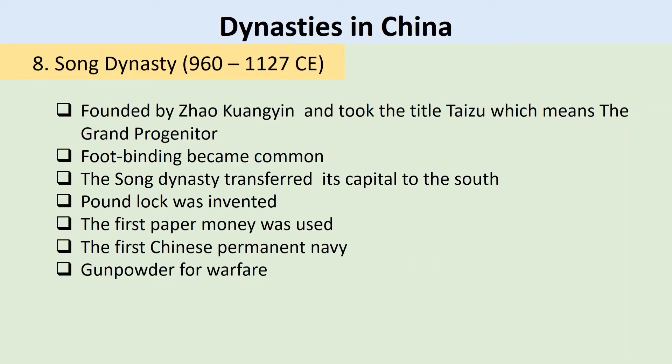The practice of footbinding among Chinese women became more common during this period. The constant attacks of the state of Jin in northern China necessitated the Song Dynasty to relocate their capital to the south — this was the beginning of the Southern Song Dynasty. Notable achievements of the Song Dynasty include the invention of pound locks that enabled bigger vessels to pass through the Grand Canal, the longest man-made canal in the world, longer than the later Suez and Panama Canals.